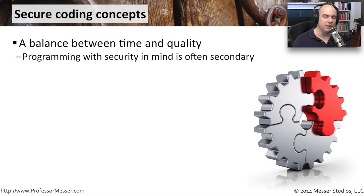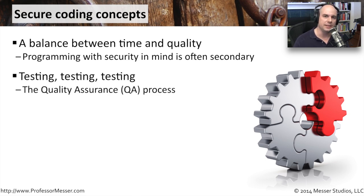If you're developing or writing your own software, there are a number of concepts you have to keep in mind to make sure that your code is going to be secure. One of the challenges you have, though, is the process and the time it takes to make that secure is going to extend your development cycle. So you often have this balancing act between speed and security. There's usually a quality assurance process where somebody tests your code, and it's very often many types of tests to keep your code as secure as possible.